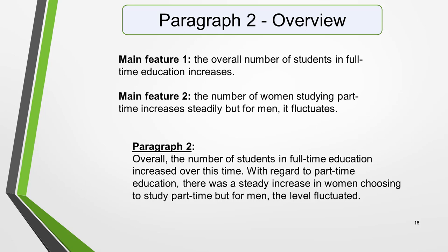Just the appropriate words and the correct verb tenses. For example: overall, the number of students in full-time education increased over this time. With regard to part-time education, there was a steady increase in women choosing to study part-time, but for men the level fluctuated.